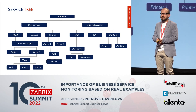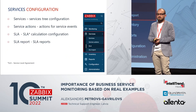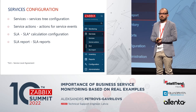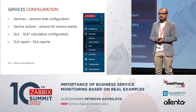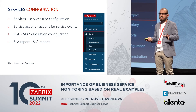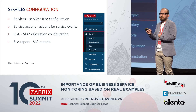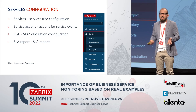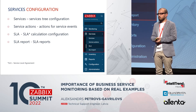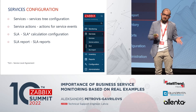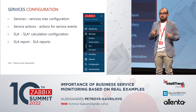To see that business perspective, we need to go to the services and service configuration — a pretty basic yet efficient menu where we can create services. We configure the tree, configure actions for what Zabbix will do if something happens, specify the SLA, and do SLA reports to see if we achieved it or maybe need to apologize to our customers.